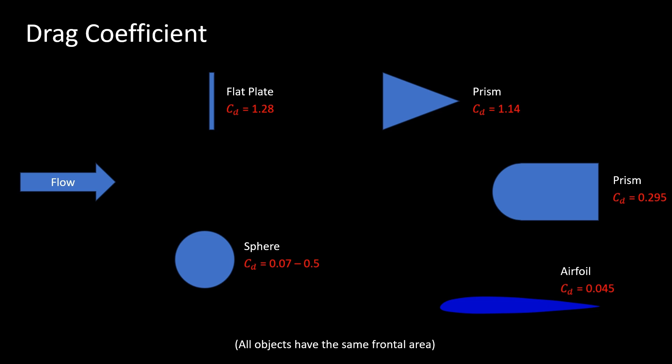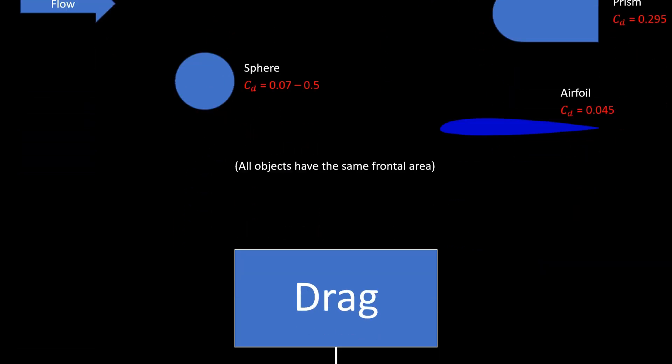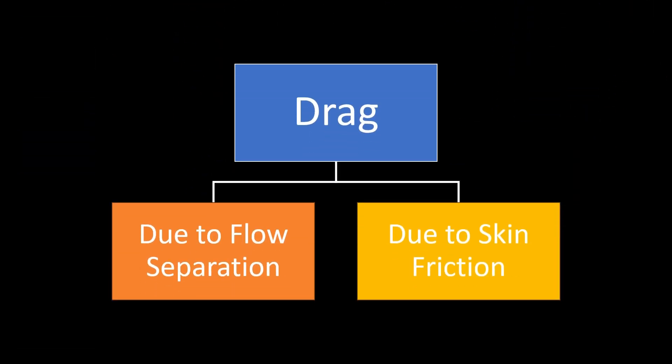Generally, the total drag is broken into two classes: drag due to flow separation and drag due to skin friction.